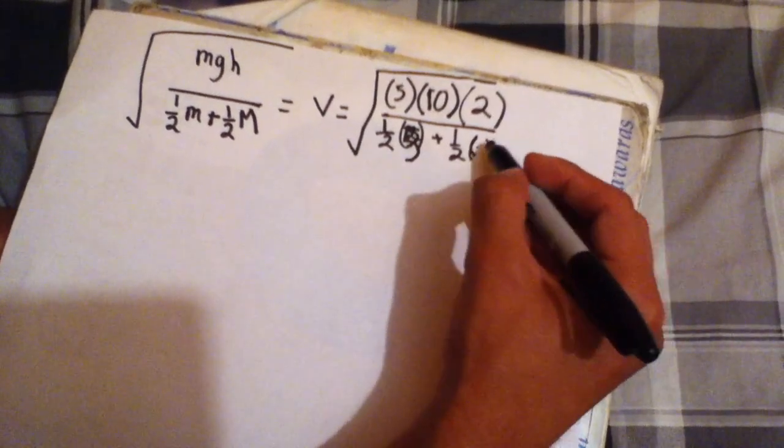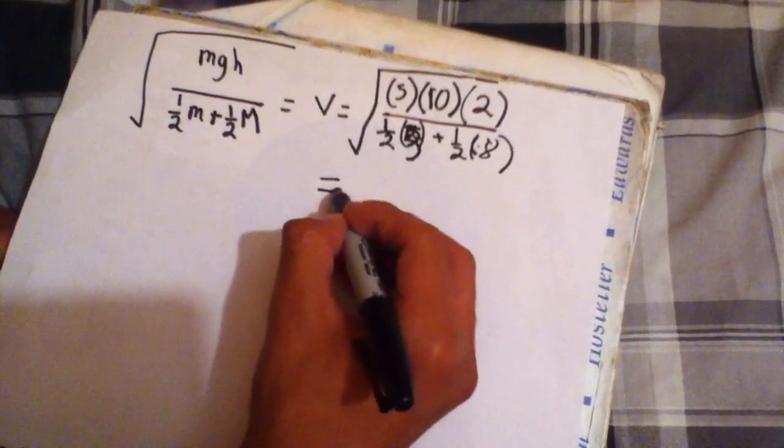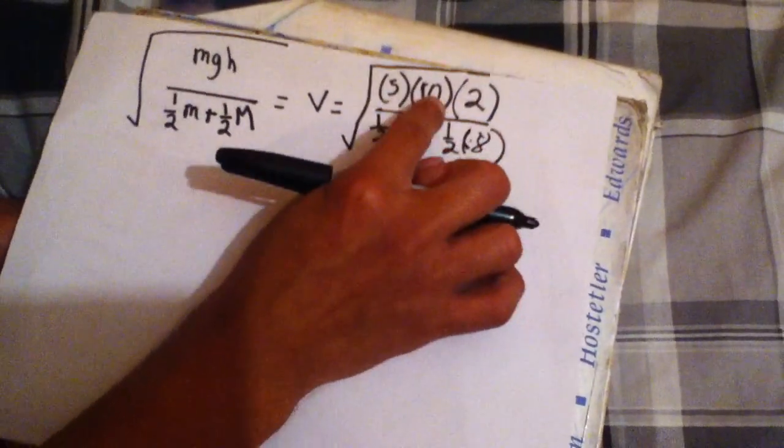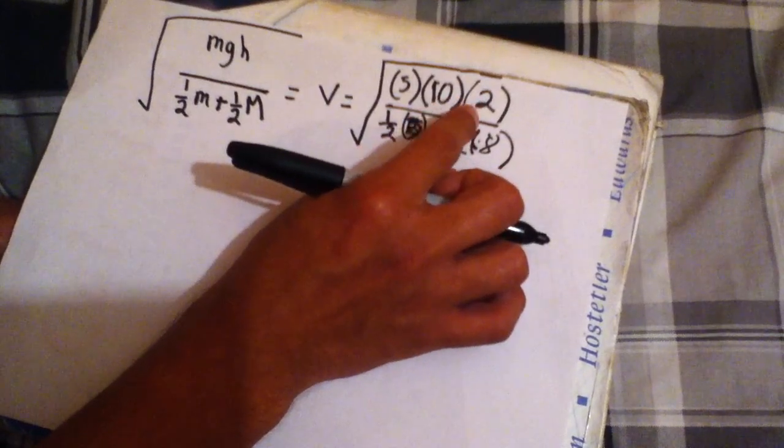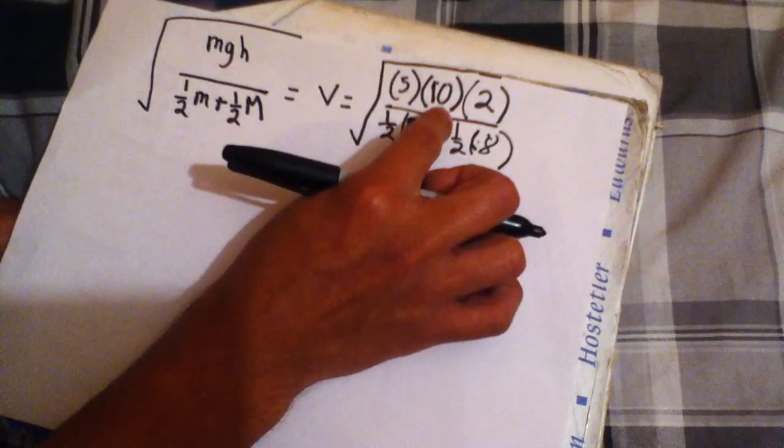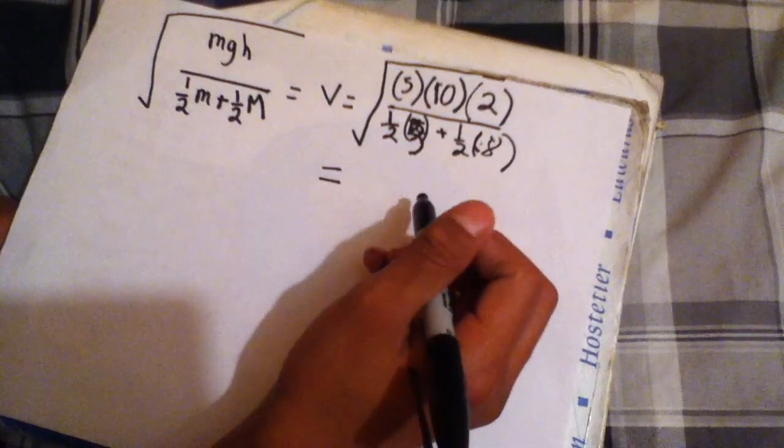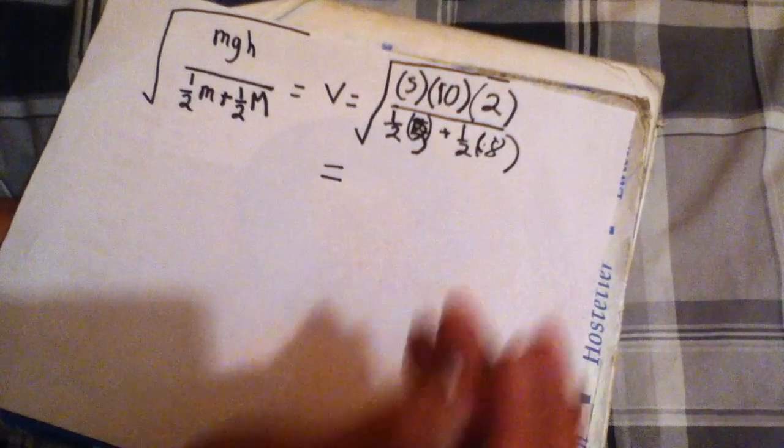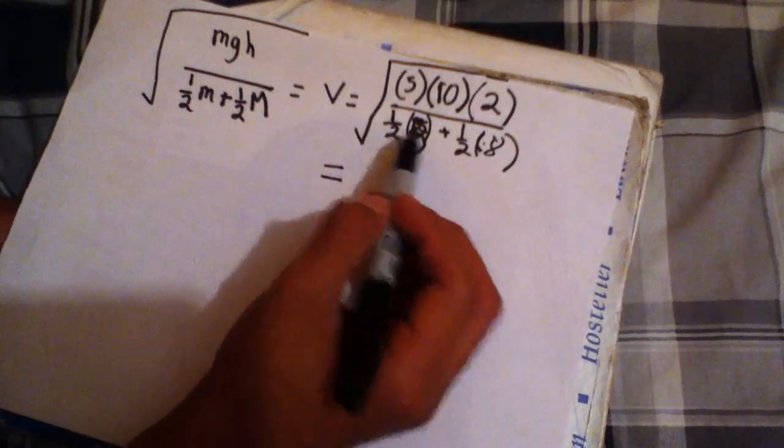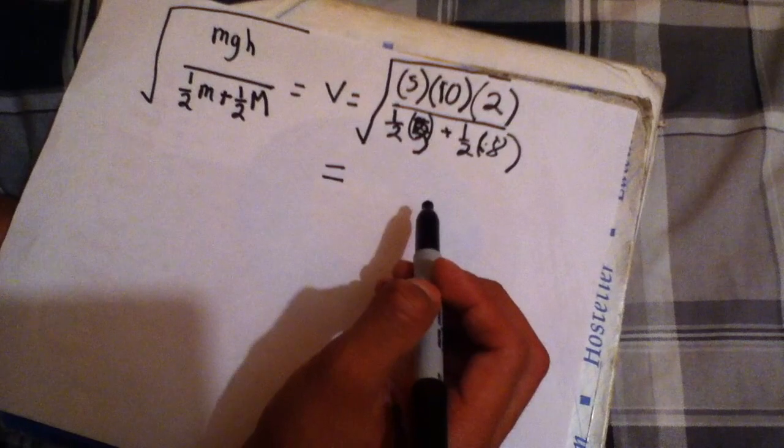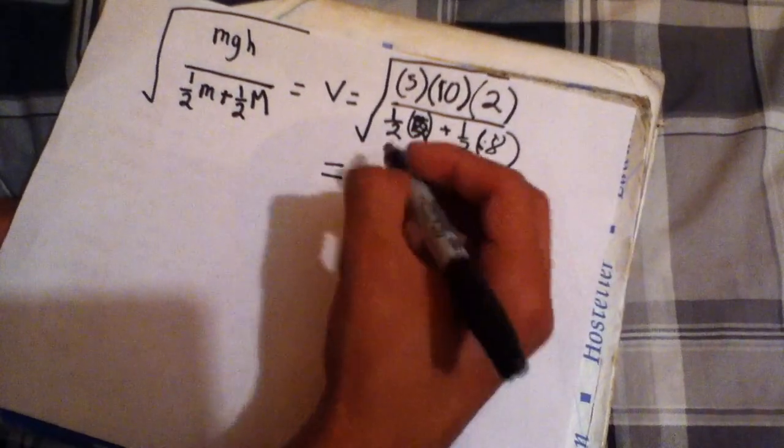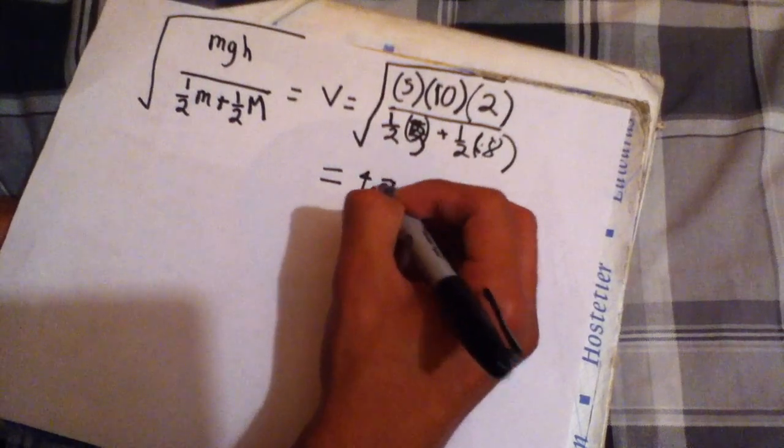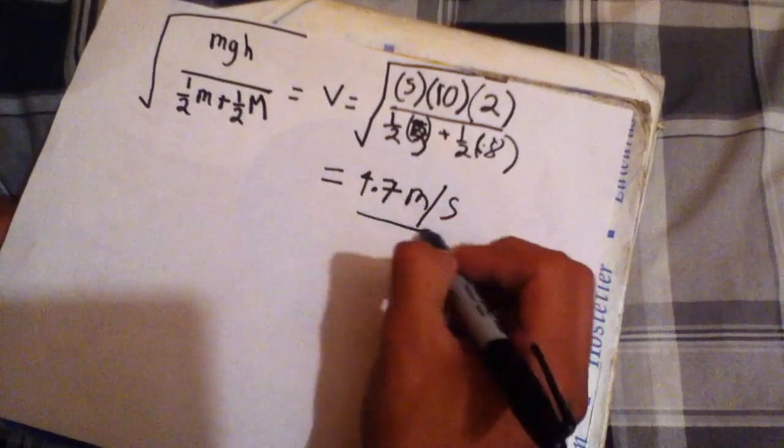So then this is 8. Then 5 times 10 is 50, times 2 is 100. You guys can just put this on your calculator, but if you guys plug it in correctly you should get 4.7 meters per second. That would be your final answer.